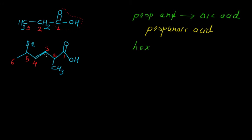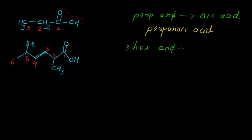We can see that there is a carbon-carbon double bond between carbon number 3 and 4, so we must include 'en' in the name. This double bond is present at position 3, so we write '3-en'. Since this is a carboxylic acid, the ending becomes 'oic acid', giving us '3-hexenoic acid'.